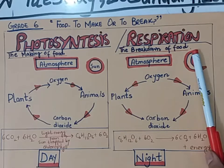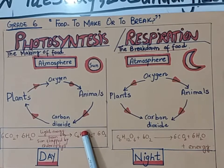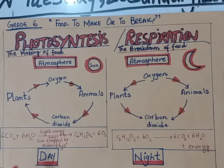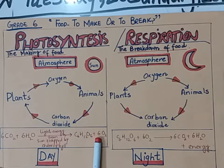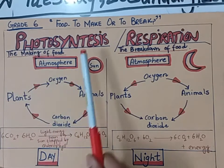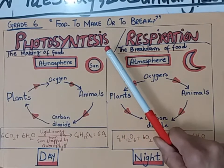Green plants are often called the food factories of the world because almost all the food on earth comes directly or indirectly from green plants. Green plants make their food using carbon dioxide and water, using sunlight energy, and form glucose as food while releasing oxygen. This is the process of photosynthesis. The word photosynthesis is derived from two words: 'photo,' meaning light, and 'synthesis,' meaning putting together.